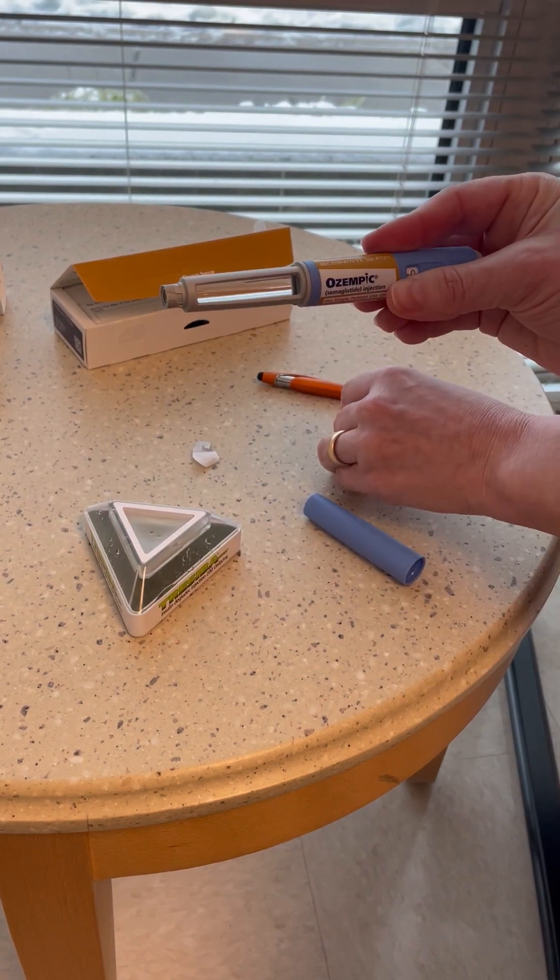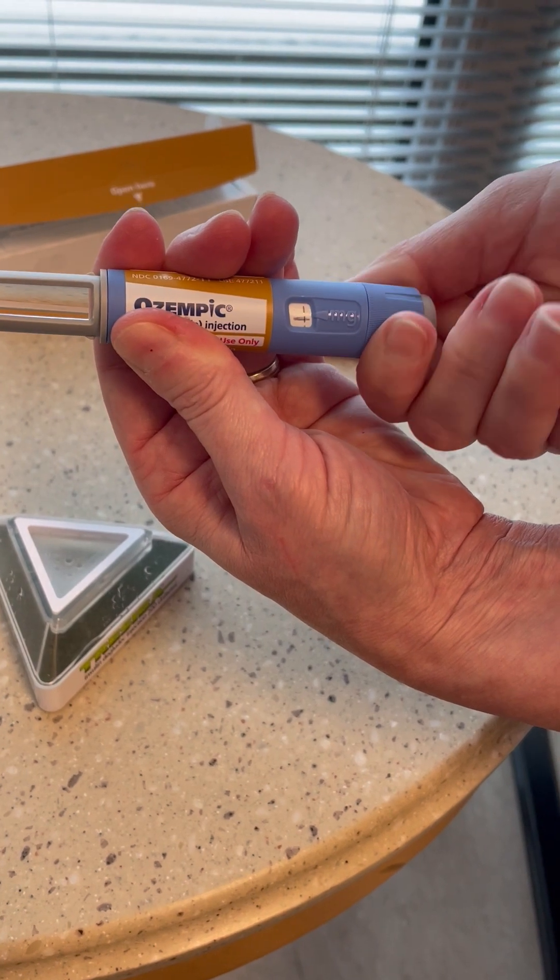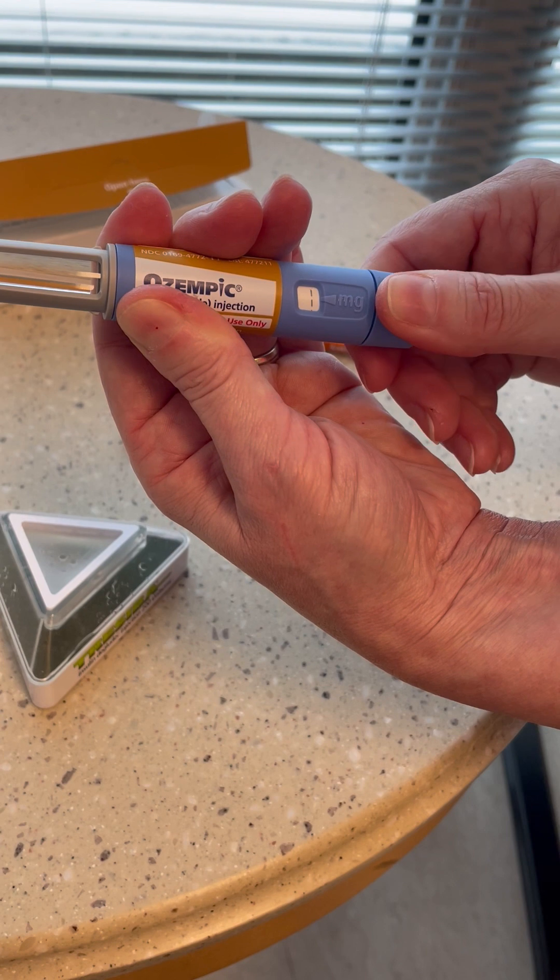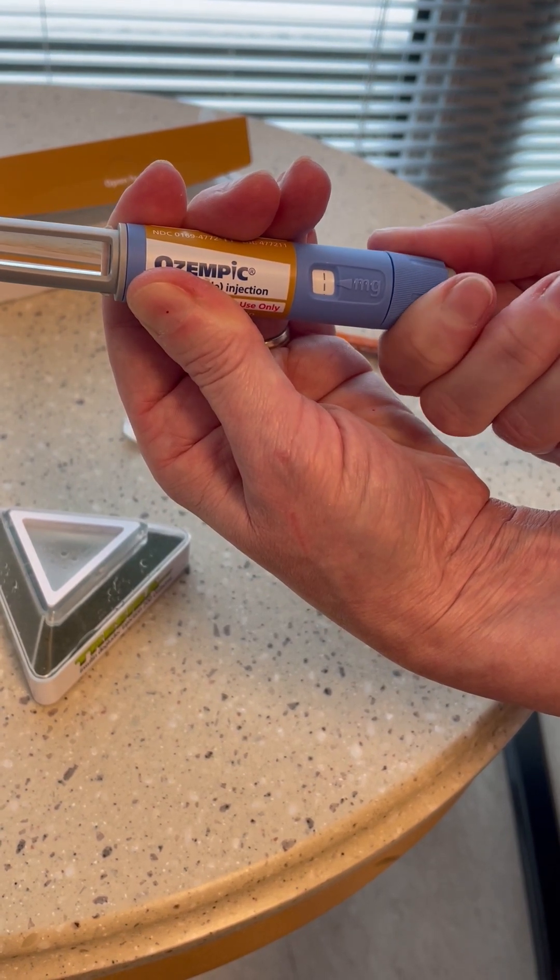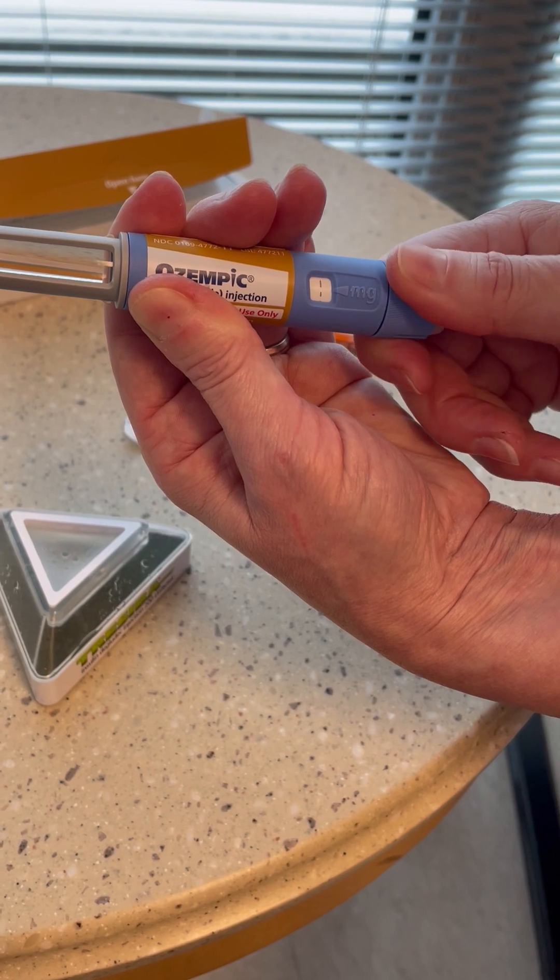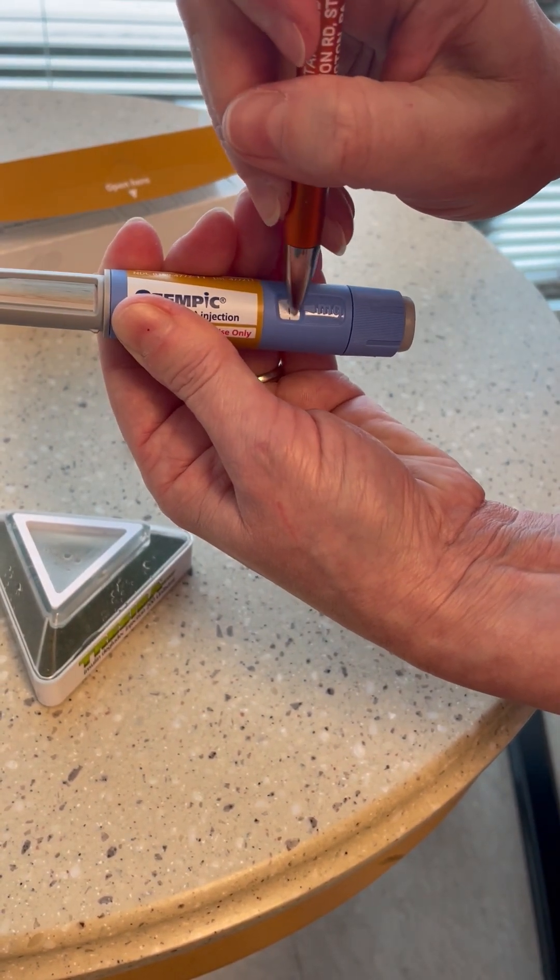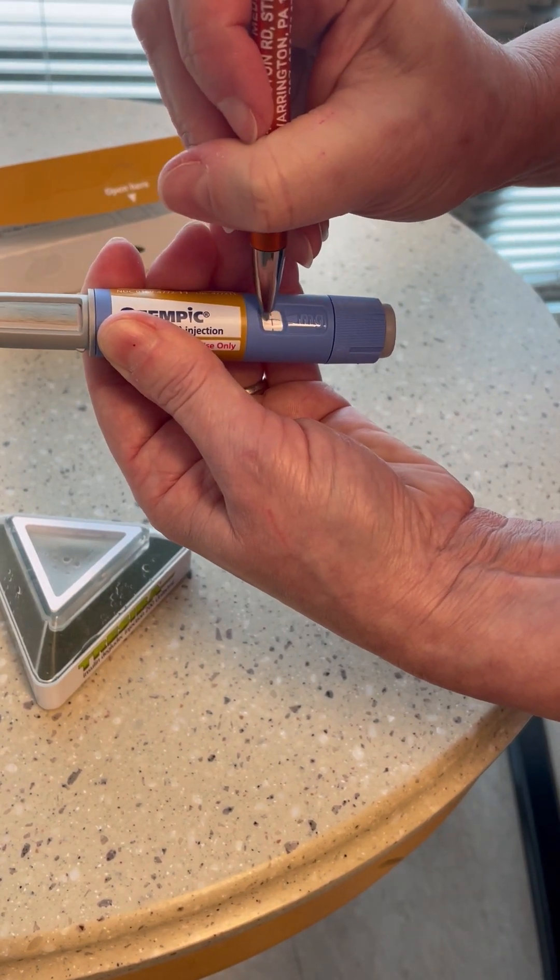When we need to go to the next dose, we will find the 14 dash mark which is the equivalent of 0.5 and add another 14 dashes: one, two, three, four, five, six, seven, eight, nine, ten, eleven, twelve, thirteen, fourteen. Mark it there with another pen, ideally of a different color. I'm going to put two lines to indicate that this is the one milligram equivalent.